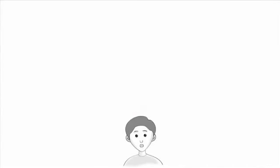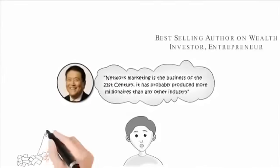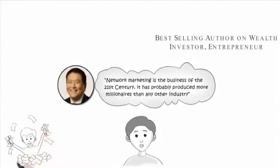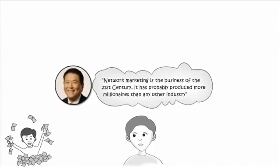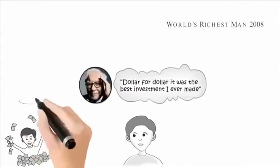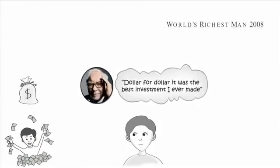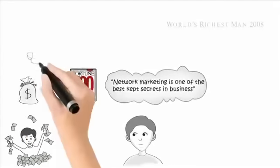What do experts know that the average person doesn't? Kiyosaki says network marketing is a business of the 21st century. It's produced more millionaires than any other industry. Warren Buffett says dollar for dollar, it was the best investment he ever made. He bought three MLM companies.